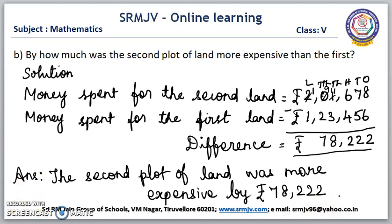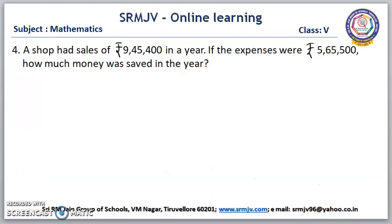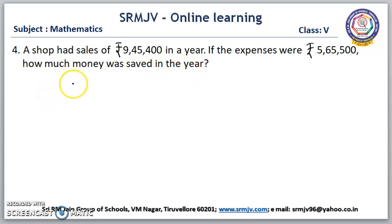The next question is: a shop had a sale of Rs. 9,45,400 in a year. If the expenses were Rs. 5,65,500, how much money was saved in the year? Now we have to find the money saved in the year. For that, we have to subtract the money spent from the annual income of the shop. Is it clear, children?